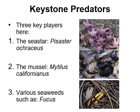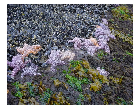Another topic in the context of biotic factors is the keystone predator concept. There are three key players in a really interesting story: the sea star Pisaster ochraceus, commonly known as the ochre sea star; the mussel Mytilus californianus; and various seaweeds such as Fucus. These players are found throughout the west coast of the United States and Canada — British Columbia, Washington, Oregon, and California.